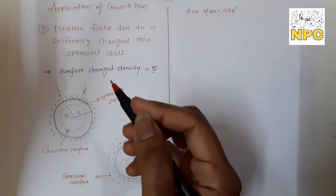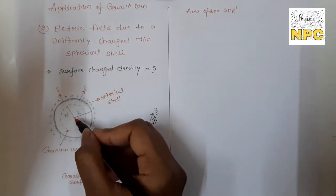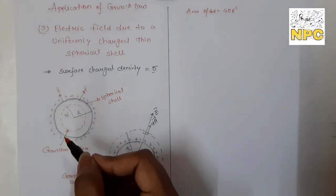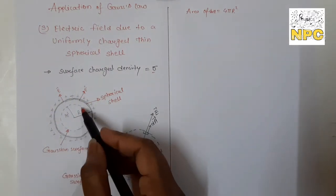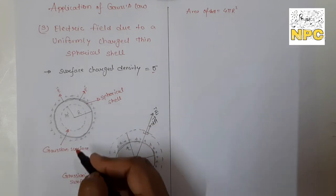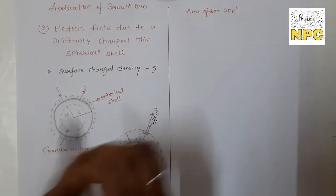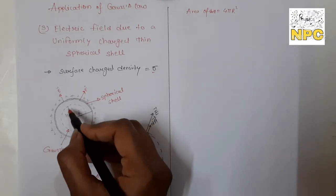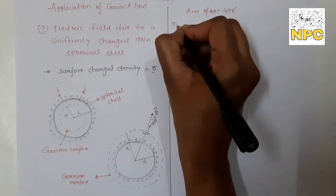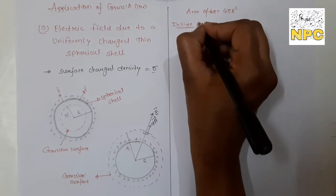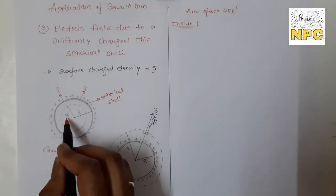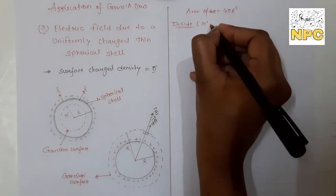Now we will find the electric field inside the spherical shell. To find it inside, you need to construct an imaginary Gaussian surface inside the shell. The Gaussian surface is an imaginary construct. We have constructed the Gaussian surface inside the spherical shell with radius r. In the inside case, the radius r is less than R, so this case is r < R.